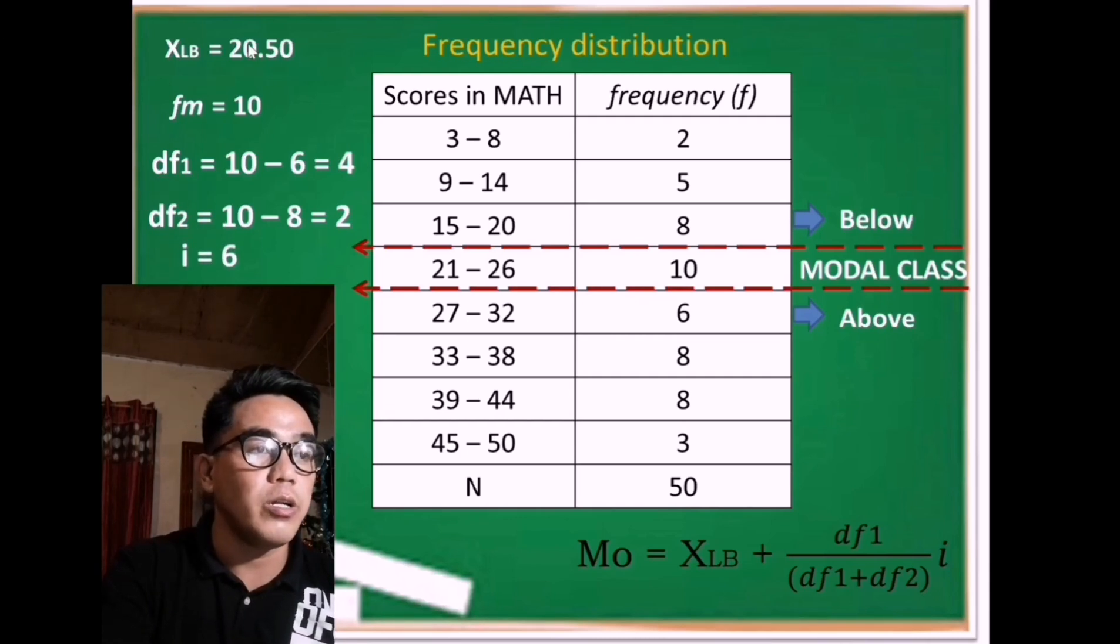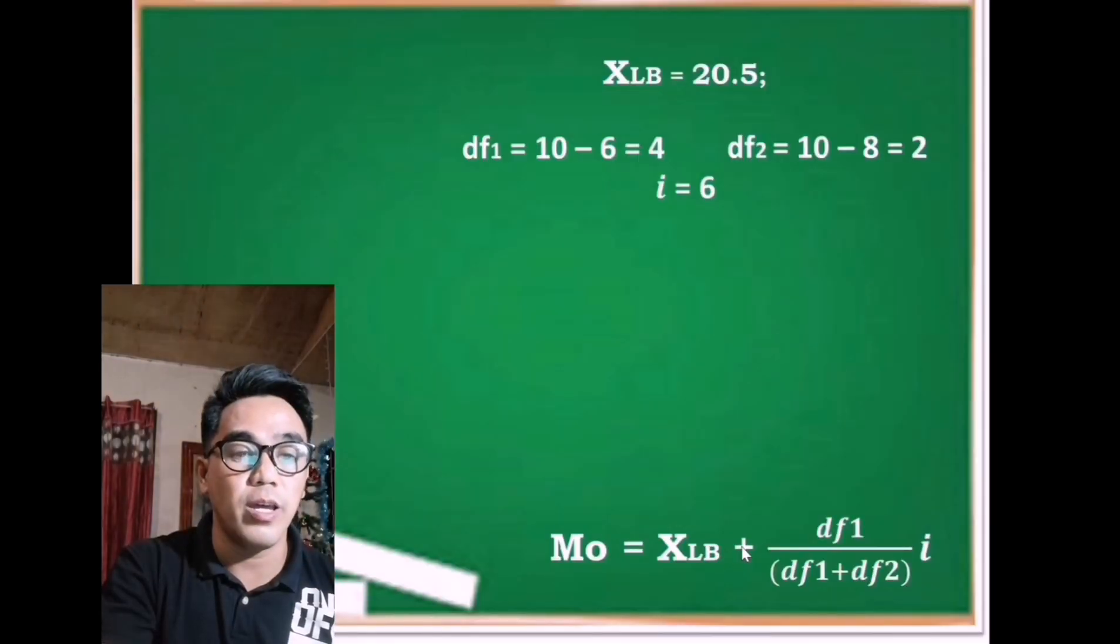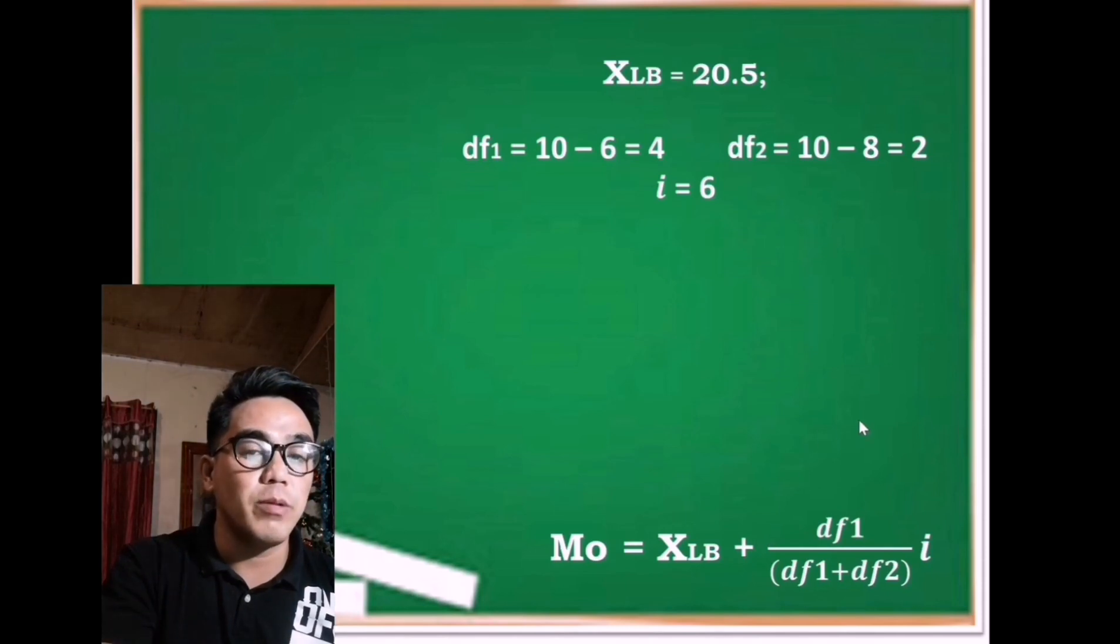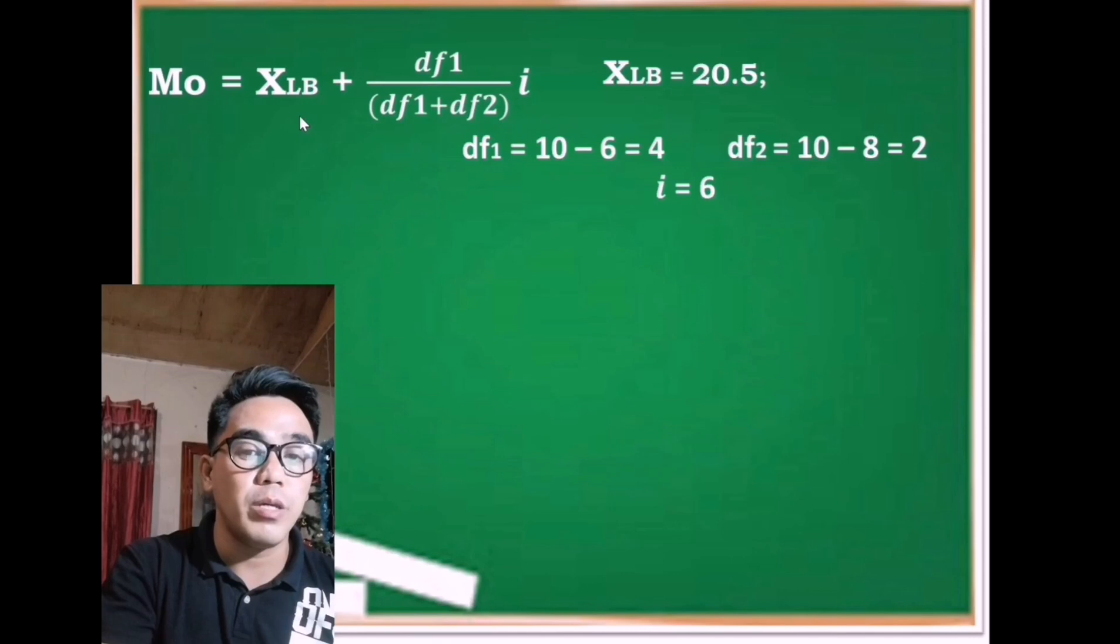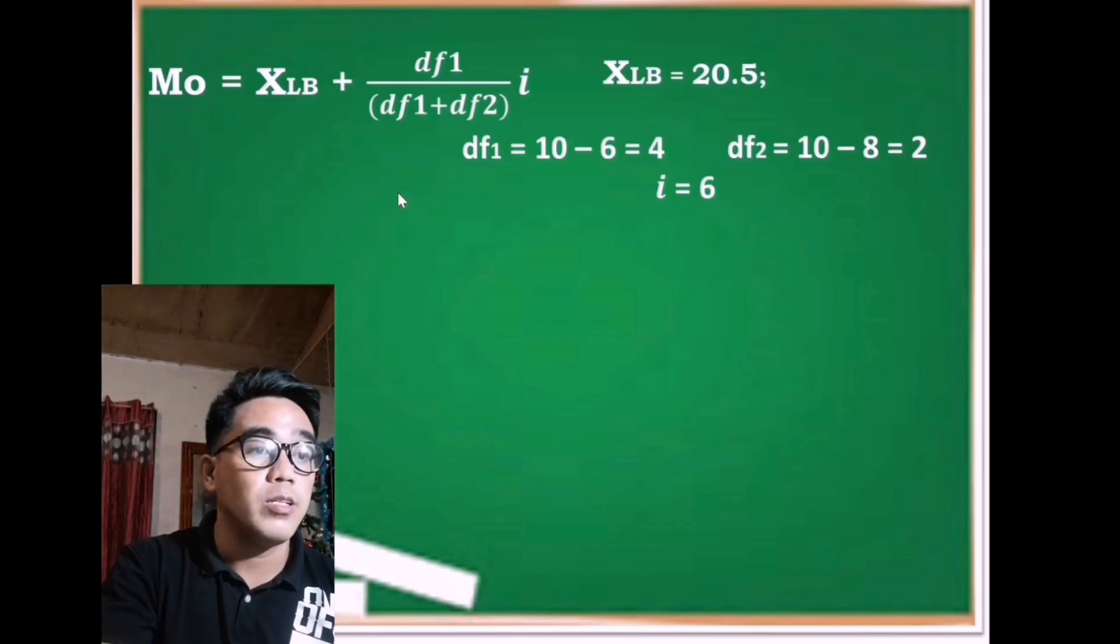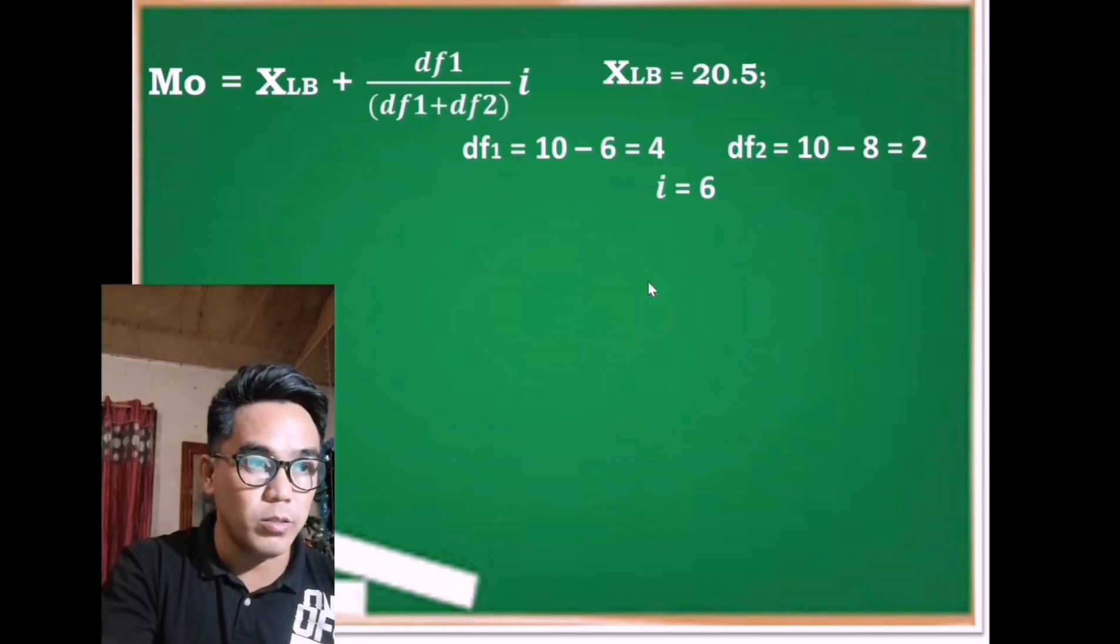These are now all the different values that we need in order to solve the mode of grouped data. Shall we start now to substitute everything? Let's go back with the formula: Mo equals XLB plus df sub 1 over the sum of df sub 1 and df sub 2 times i.